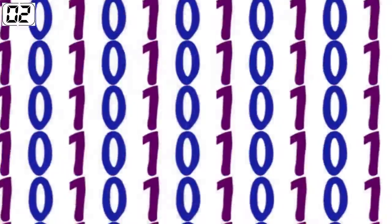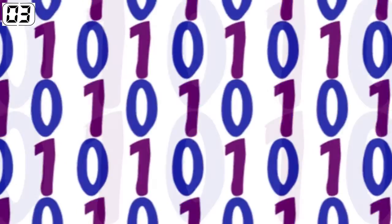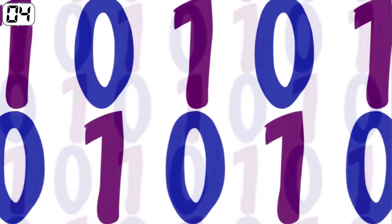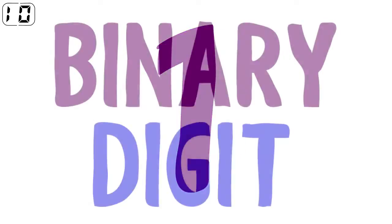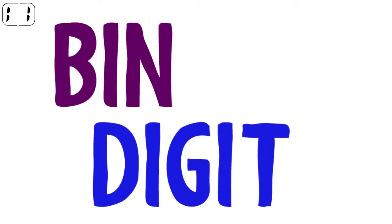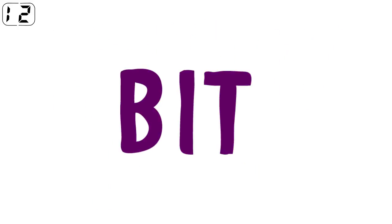First up, we need to know that a bit is the smallest unit of data in computing. A bit can have one of two values, usually 0 and 1. The word bit is a contraction of the term binary digit.